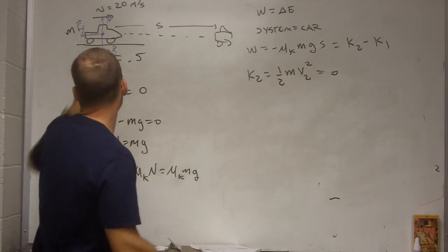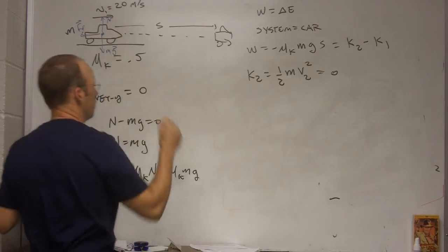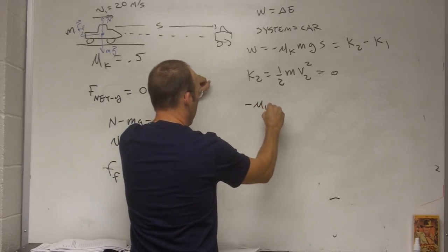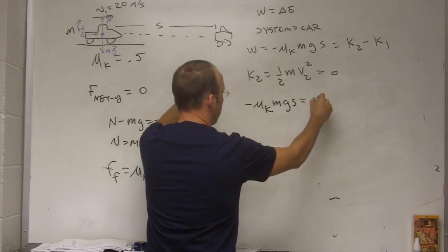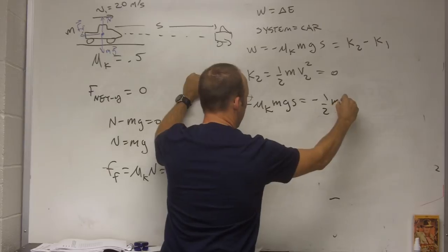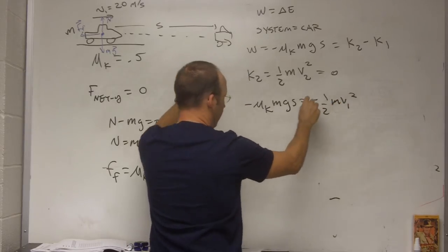And then the initial velocity is, this is v1. So, I have negative mu k, mg, s equals negative one-half m, v1 squared, zero minus that.